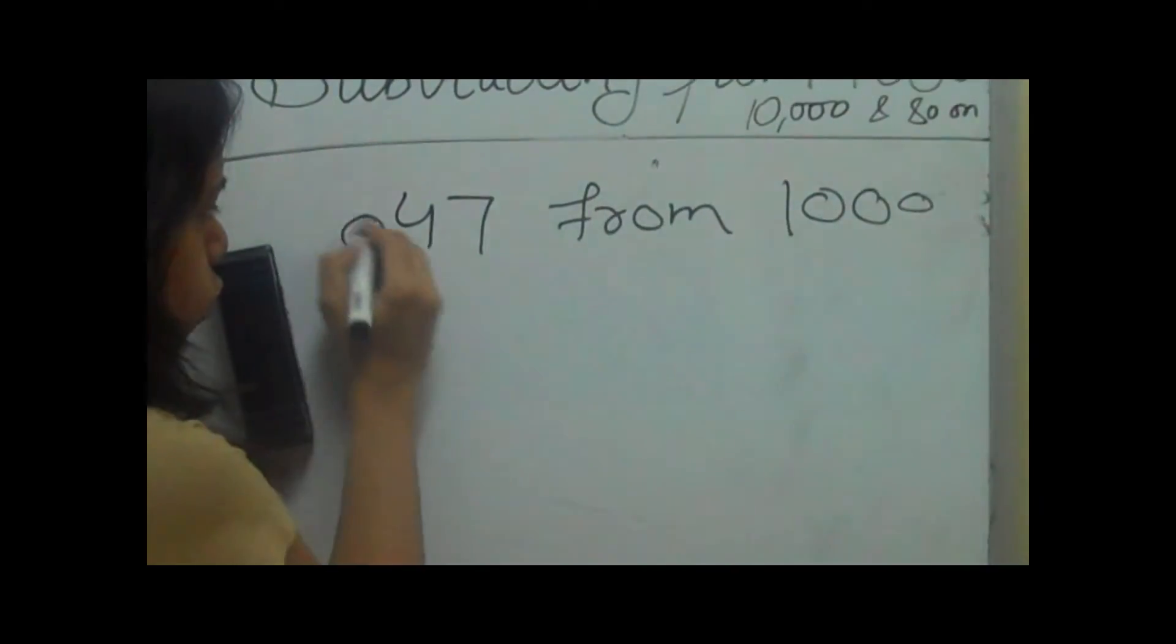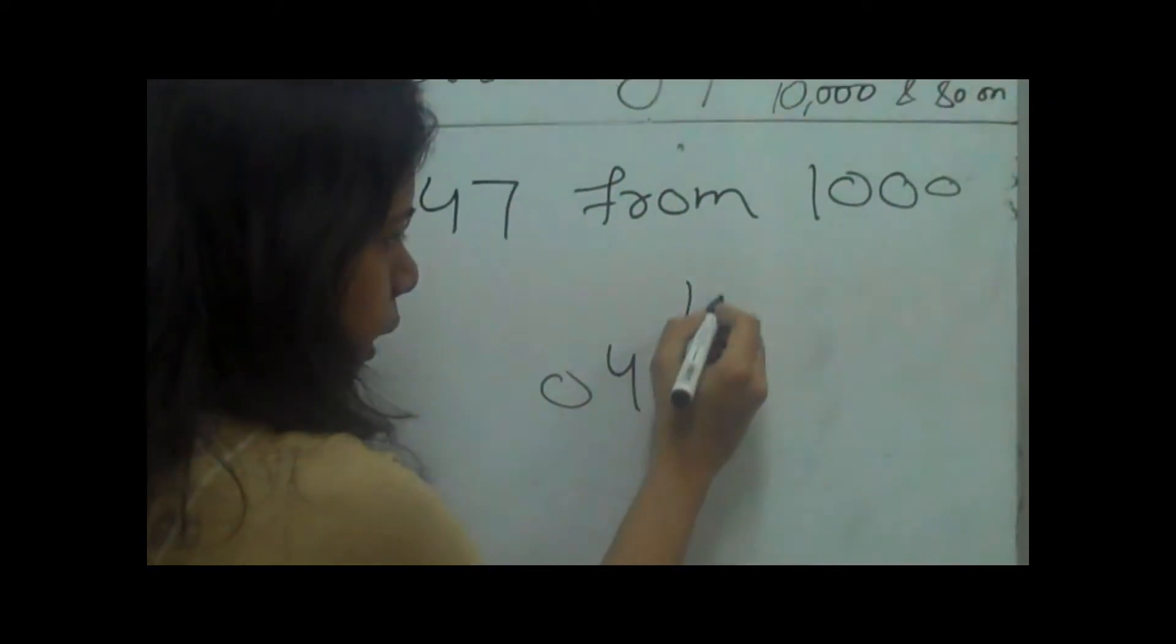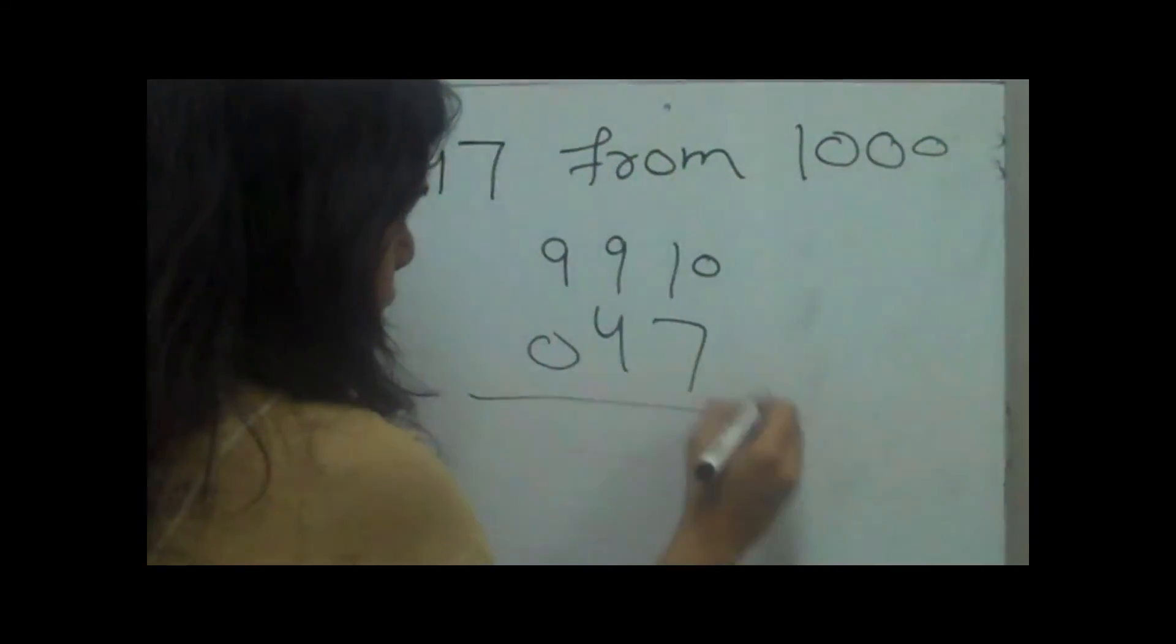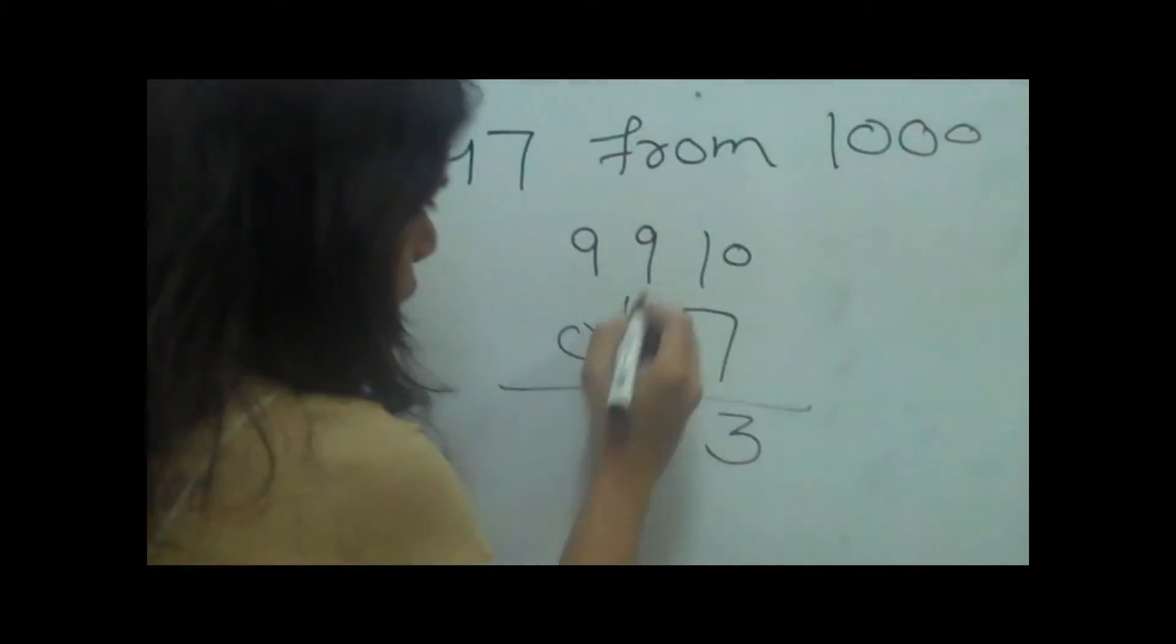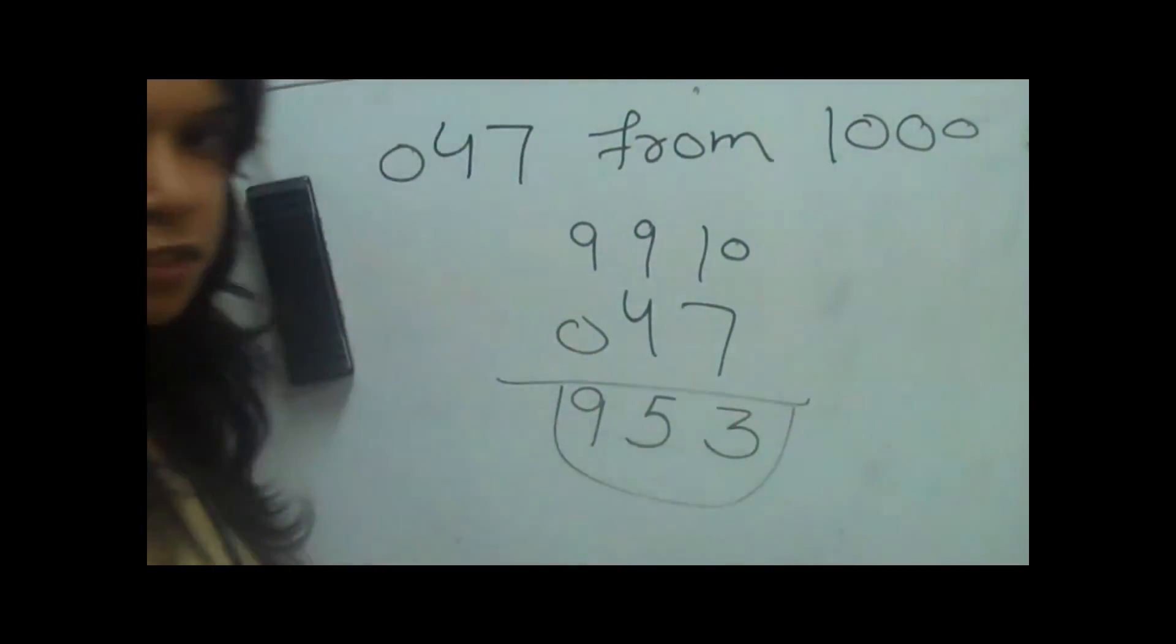What we will do is put a 0 before this number and similarly subtract the last digit from 10 and other digits from 9. So 10 minus 7 makes 3, 9 minus 4 makes 5, and 9 minus 0 is 9. This is the answer.